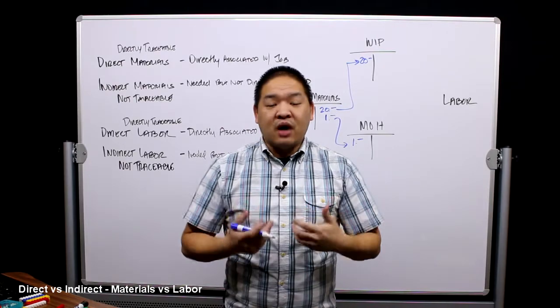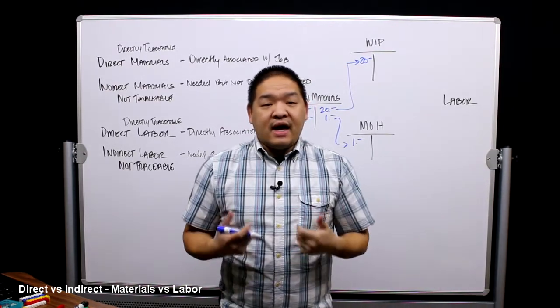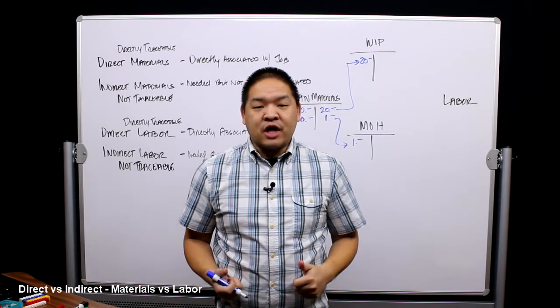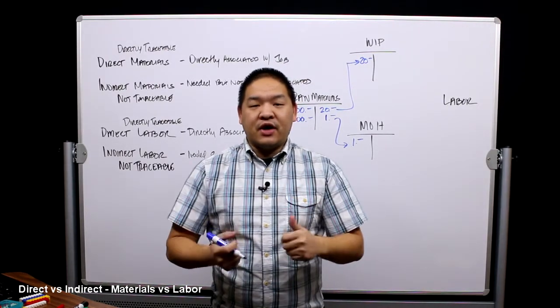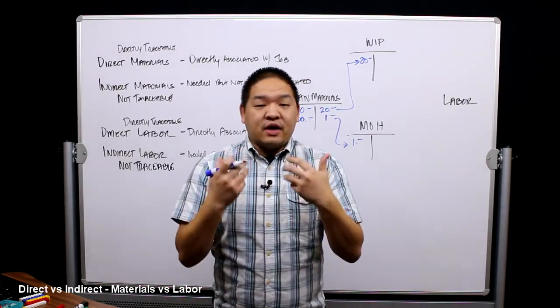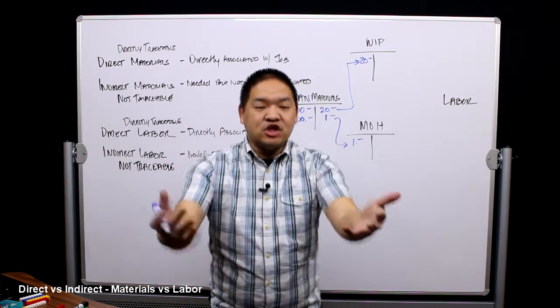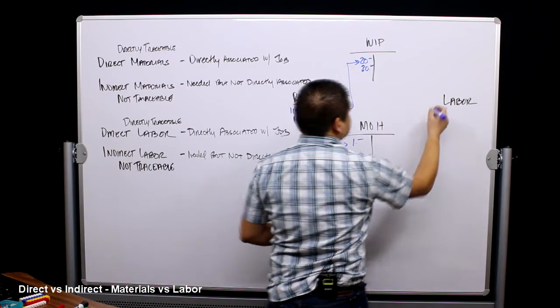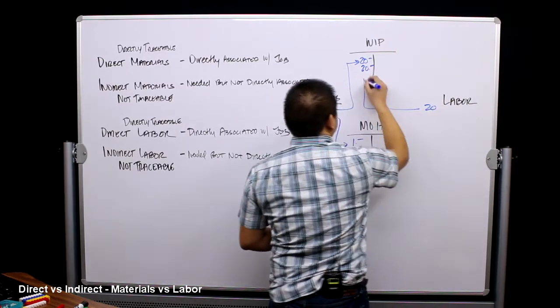So I'm working on the car and I get paid 20 dollars an hour and it took me an hour to do that oil change. So where does that 20 dollars go? Well, because that 20 dollars is directly associated with that job, that 20 dollars is going to go to WIP. So 20 dollars will go into WIP.